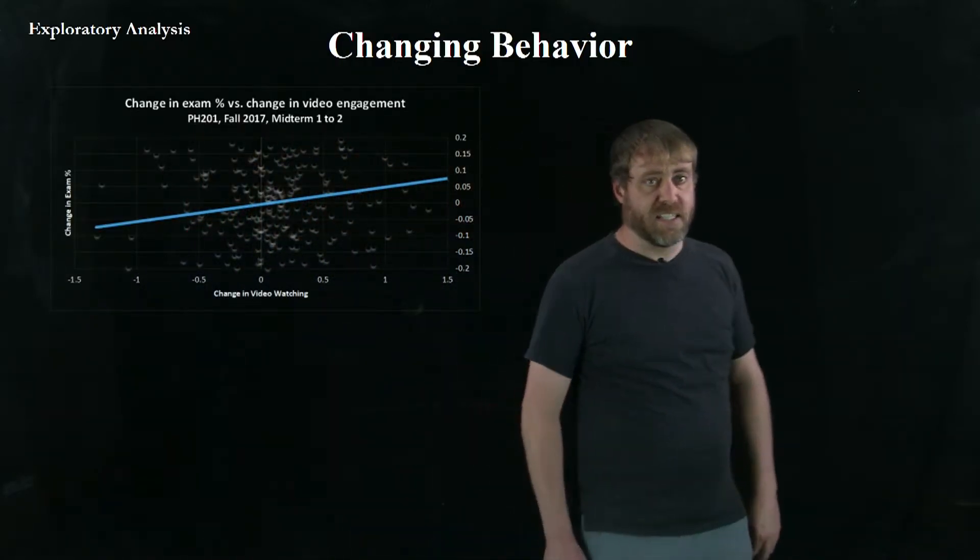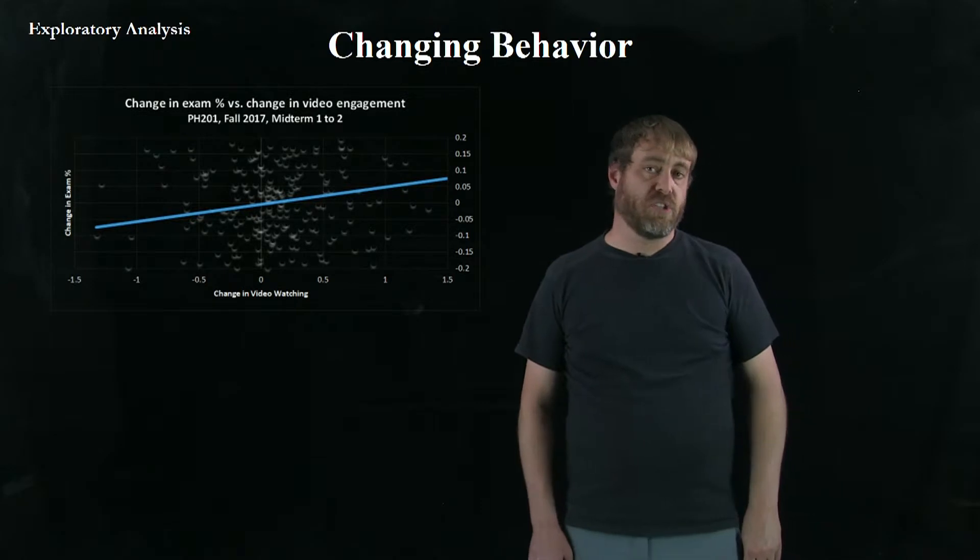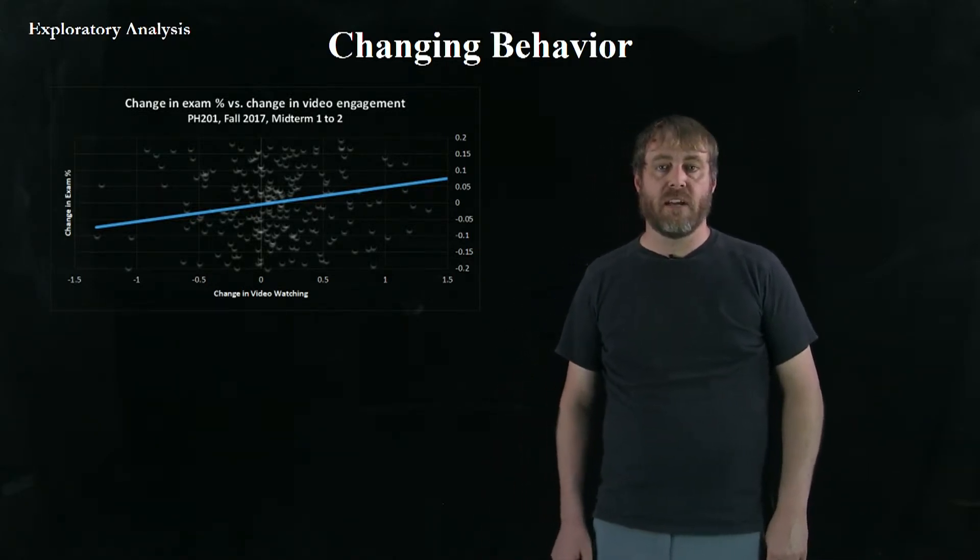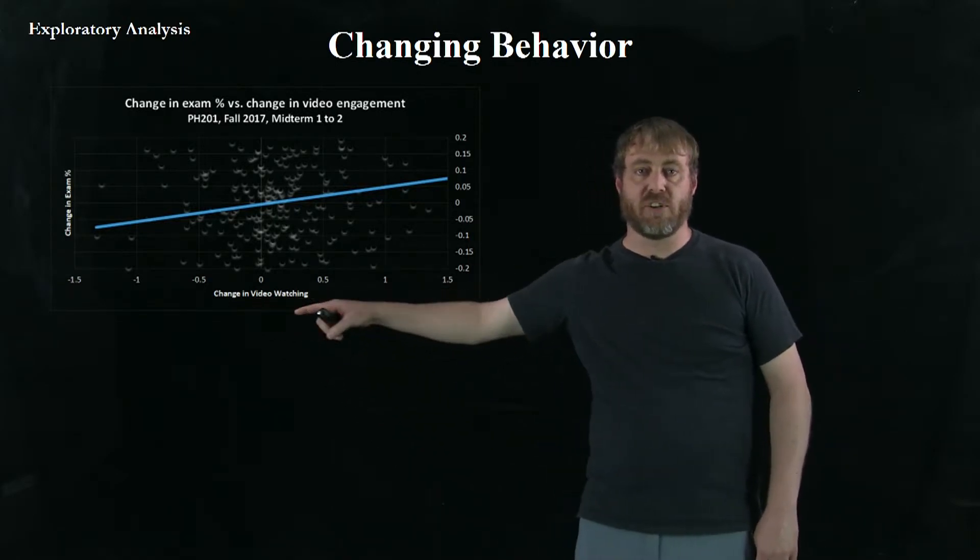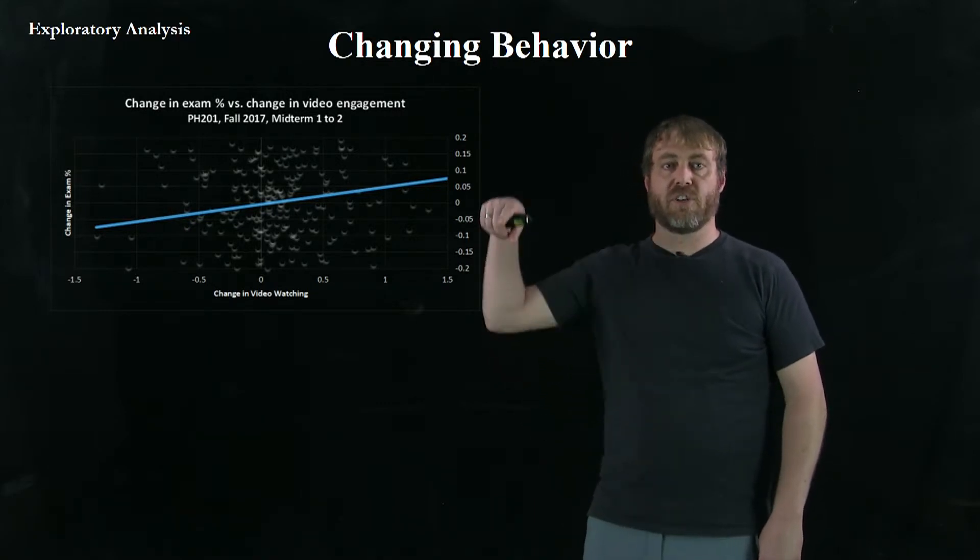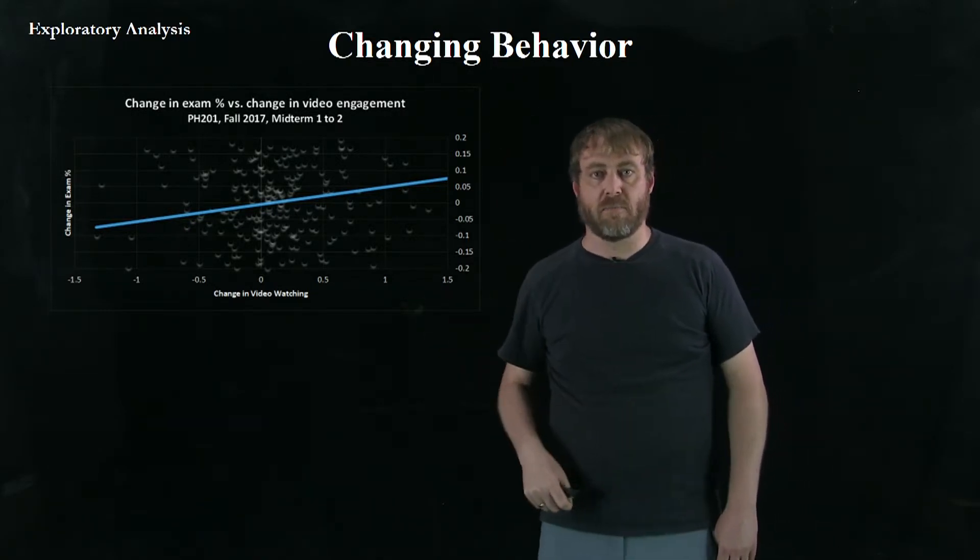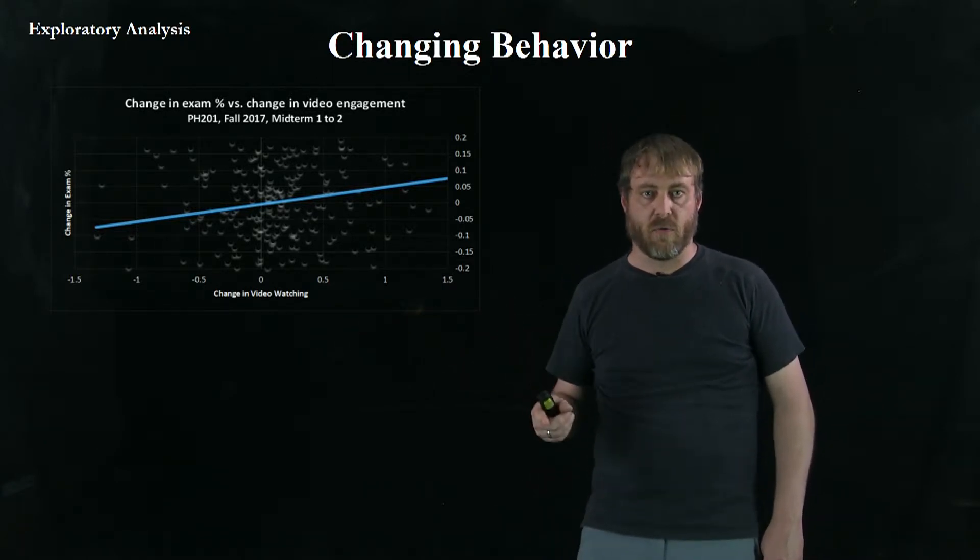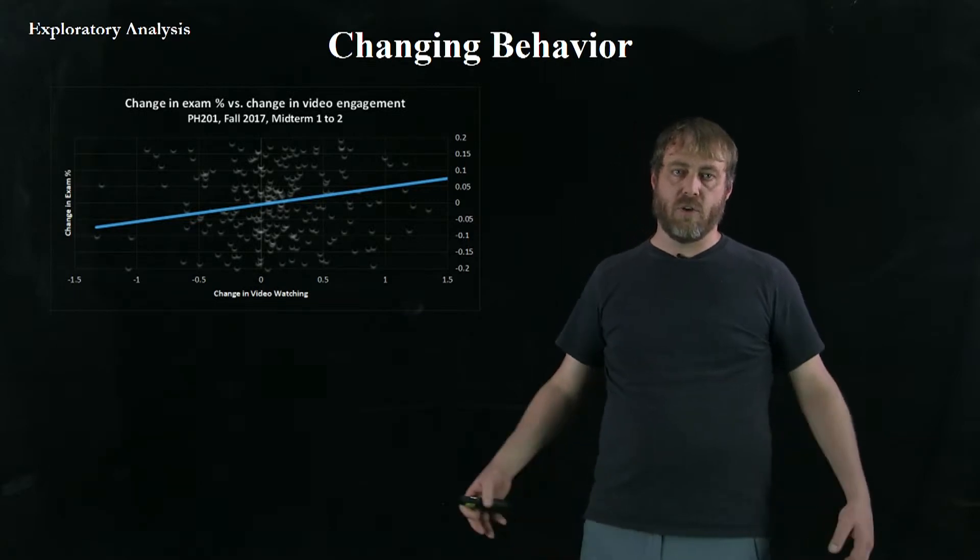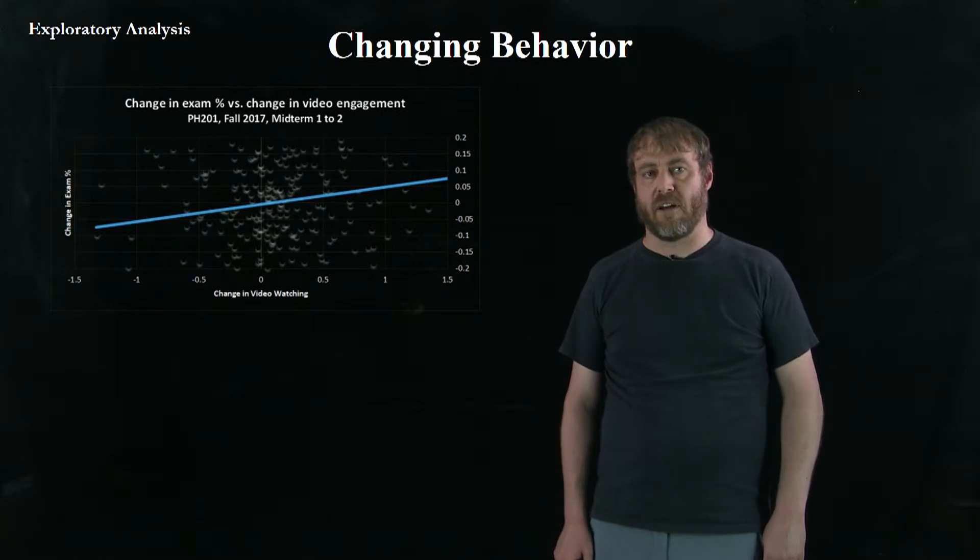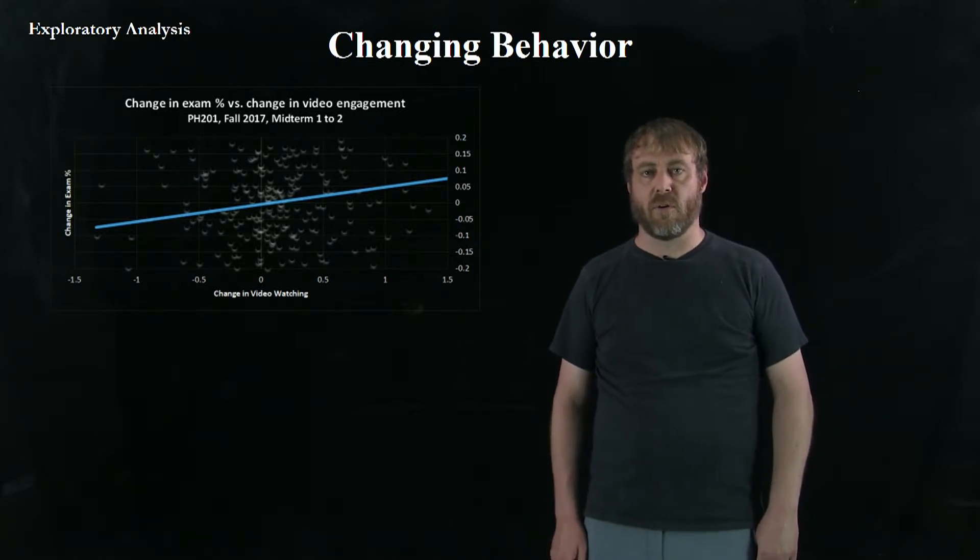So the next thing we asked is what happens if students change their behavior? Are you destined to the grade that you get on an exam? So right here we plotted on the horizontal axis the change in video engagement from one exam period to the next versus the change in exam. And notice we have a nice positive slope. That meant that students that changed their behavior, started watching more videos, tended to do better on exams. Not a huge effect. It could have a five, maybe up to a six, seven percent effect on your final grade if you really change your behavior quite a bit.